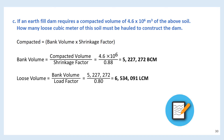For example 1.5C: determine the loose volume. Using the general equation, compacted volume equals bank volume multiplied by shrinkage factor, so bank volume equals compacted volume divided by shrinkage factor. Solution: 4.6 × 10⁶ divided by 0.88 equals 5,227,272 BCM. Then loose volume equals bank volume divided by load factor: 5,227,272 divided by 0.80 equals 6,534,091 LCM.